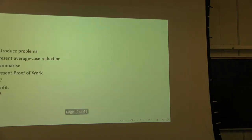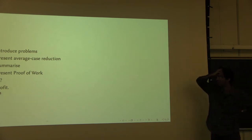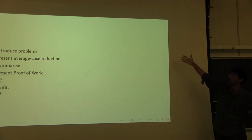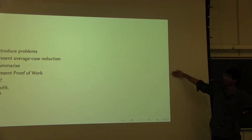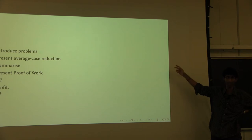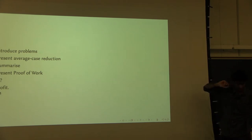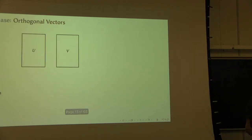I'm first going to define the problems I'm going to be talking about, then show you the average-case reduction, and then show you one application of the average-case reduction we have, which is a construction of a proof-of-work scheme. So let me start by defining the problem I left out earlier: this problem called orthogonal vectors.